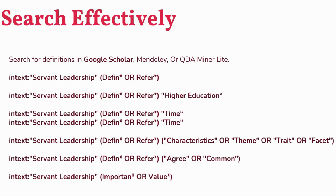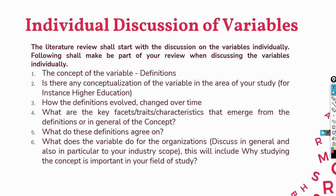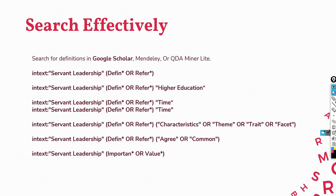You can also use Mendeley and QDA Miner Lite. To search effectively for these key elements or ingredients, I'll use Google Scholar. For each step, I've got a particular search string — one for each of the six steps.